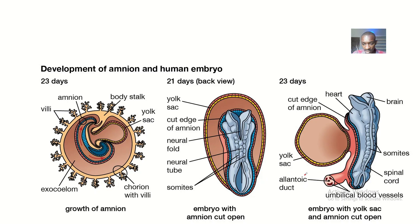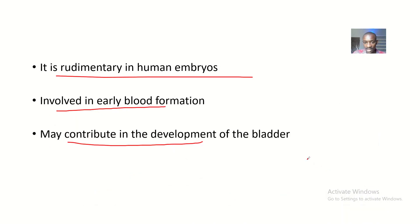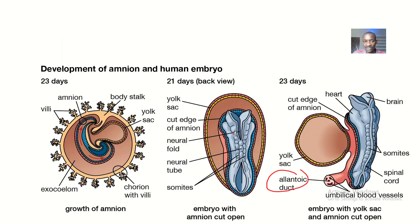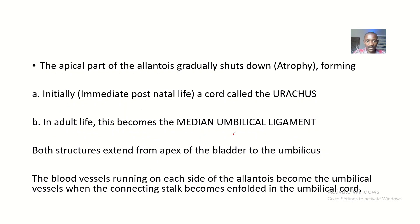Looking at this diagram, this is the Allantois with umbilical vessels. Our focus should be on the median umbilical ligament — that's talking about the Allantois as a whole.